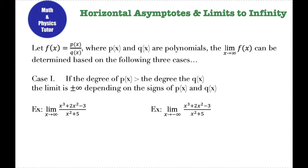So if I look at this first example, the degree is the biggest exponent attached to a variable. The degree of the numerator is three — that's the biggest exponent attached to a variable in the numerator. The degree of the denominator is two, because that's the biggest exponent attached to a variable in the denominator. Since the degree is bigger in the numerator than the denominator, that means this limit is going to be positive or negative infinity depending on what's going on with the signs here.